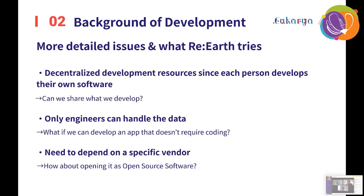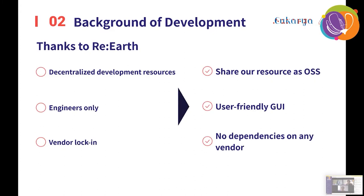The problems are: first, each person develops their own program, but the development results are fragmented and inefficient. Second, only engineers can handle the data, so it is not available to all. Third, the system is forced to be dependent on a particular vendor. Reels will try to solve these problems by sharing development results as OSS, enabling projects to be completed by UI-based commands without requiring coding, and making it an open product by releasing it as OSS.